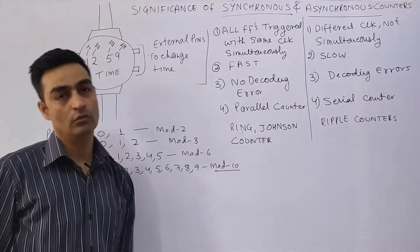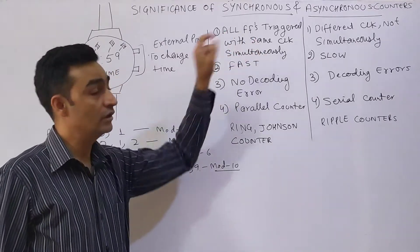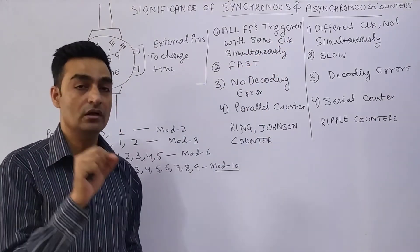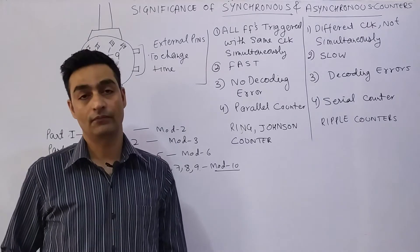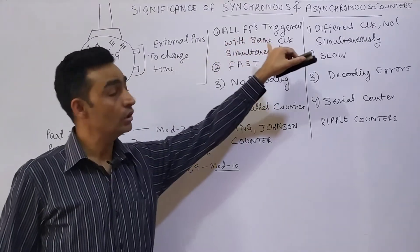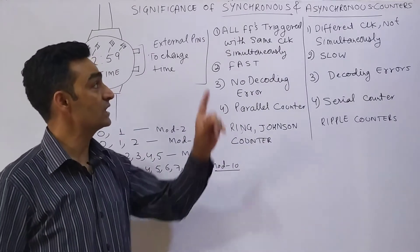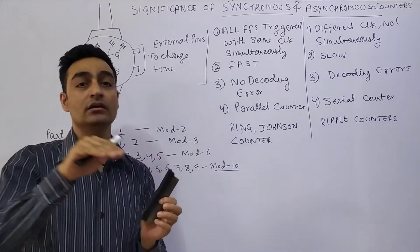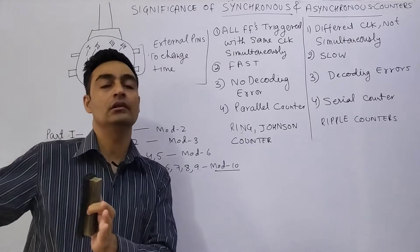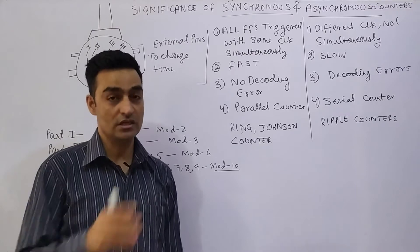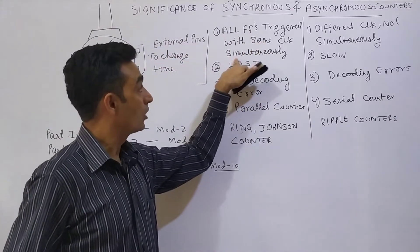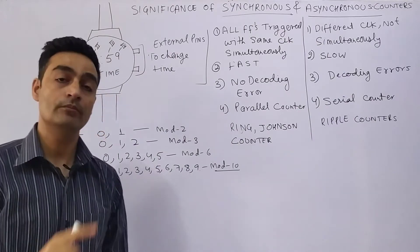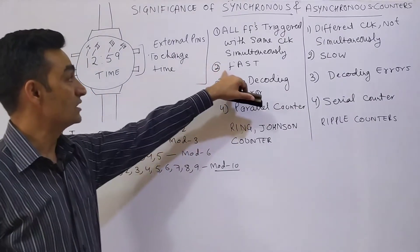Let us take each issue one by one. First, all flip-flops are triggered with the same clock in Synchronous Counters, but in case of Asynchronous Counters, different clock triggers each of the flip-flops. So the same clock is connected to all flip-flops in Synchronous Counters, but in Asynchronous Counters, the output of a more significant bit flip-flop goes as input clock to the immediate next flip-flop, and so on till the least significant bit stage. So in Synchronous Counters clock is applied simultaneously to all flip-flops, but in Asynchronous Counters it is not.